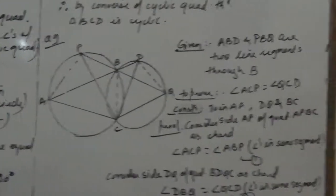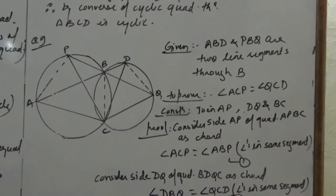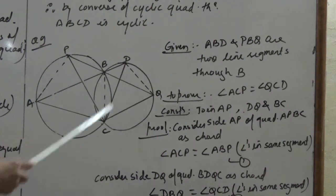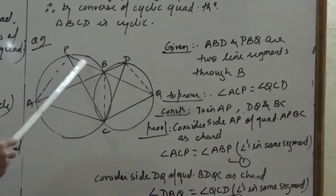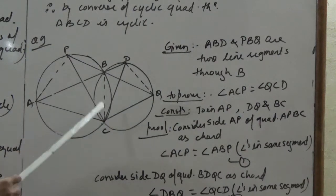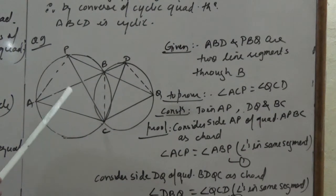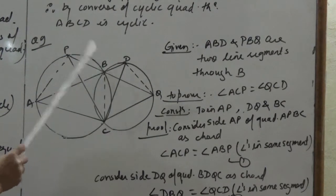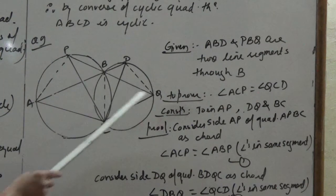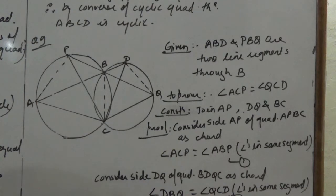In question 9, it is given that two circles intersect at points B and C. Through B, a line segment PBQ is drawn, and through B, another line segment ABD is drawn. We have to prove that angle ACP equals angle QCD.